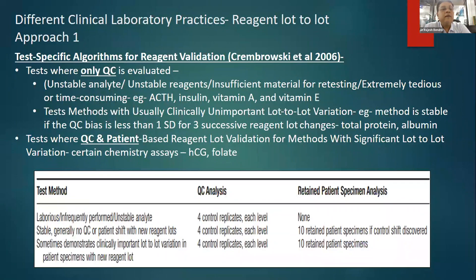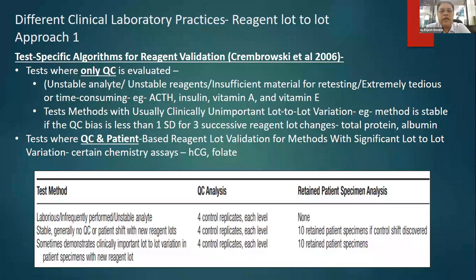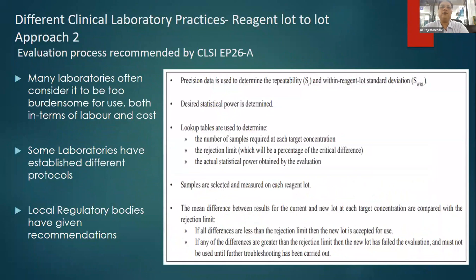For such robust parameters, the author says we can do only QC and not include patient samples. Third, for tests with inherent high variability — the majority of immunoassays would fall here, such as beta-HCG and folate as classical examples — we should use the maximum number of samples as part of lot-to-lot validation, using a combination of QC as well as patient samples. The author proposed a model for these three groups detailing how many control replicates and how many retained patient samples to use.